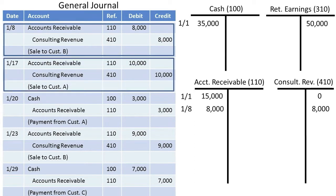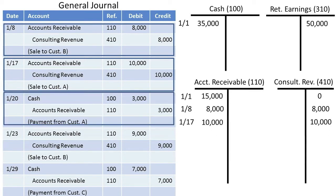January 17th, a sale on account of $10,000 to customer A. We then posted that to the ledger accounts. January 20th, we collected $3,000 from customer A and posted that to the receivables and cash account.